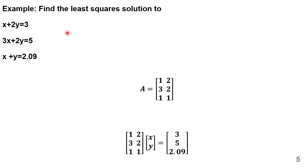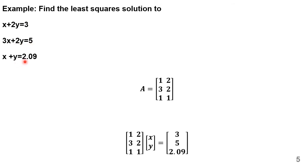Let us understand least square solutions with examples. In the first example, we have three linear equations: x + 2y = 2, 3x + 2y = 5, and x + y = 2.09.